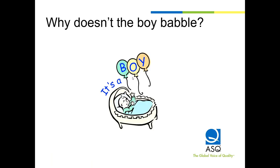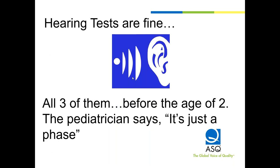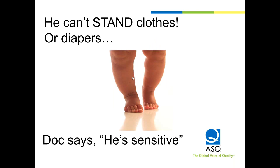Starting with Define: why doesn't the boy babble? By the age of two, Adam was not responding to us when we were talking to him. You'd think he was deaf, but we knew he wasn't. We took him to three sets of hearing tests by the age of two, and the pediatrician said it's just a phase. They weren't very helpful — they knew he could hear, but he wasn't responding. The child couldn't stand clothes or diapers, and Adam was always ripping off his clothes.